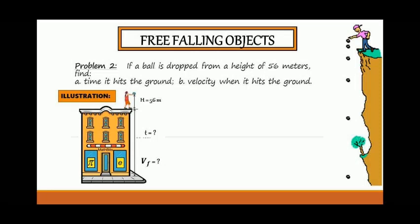Problem number two: if a ball is dropped from a height of 56 meters, find the time it hits the ground and the velocity when it hits the ground.